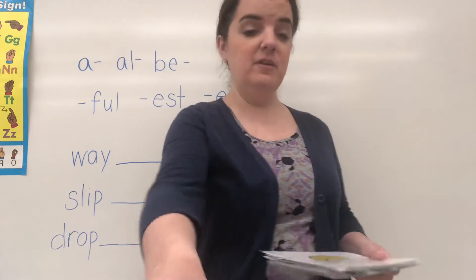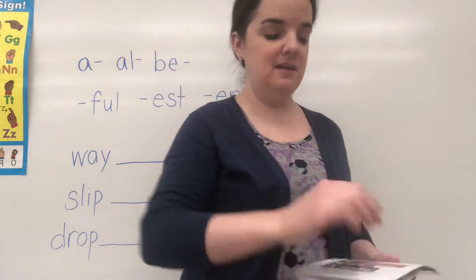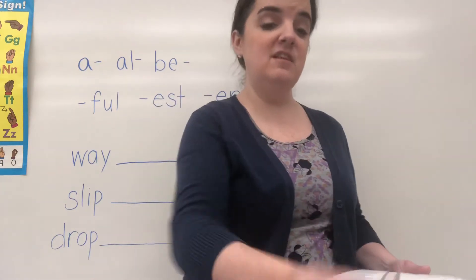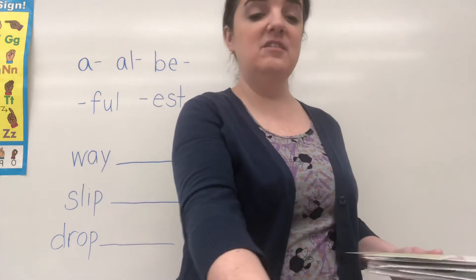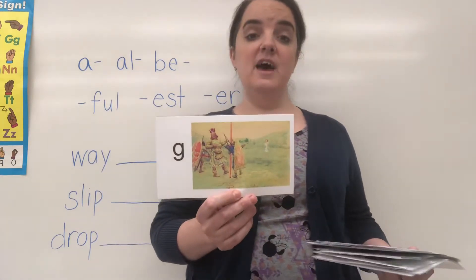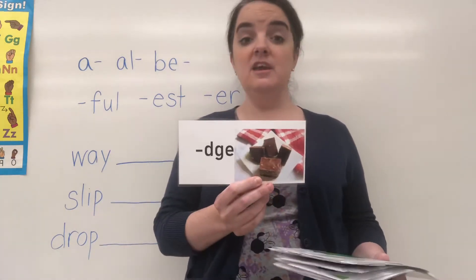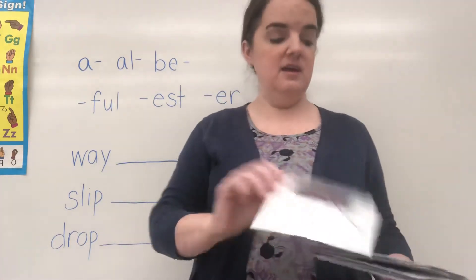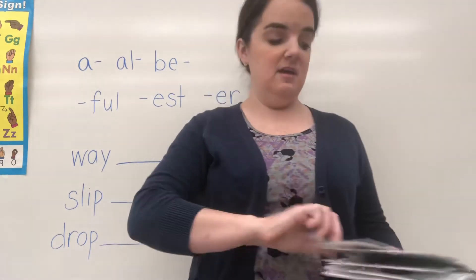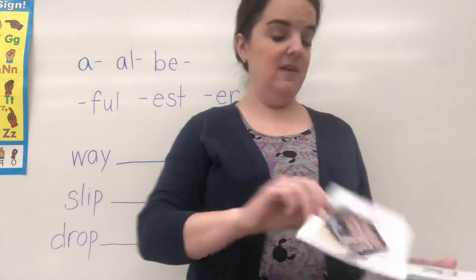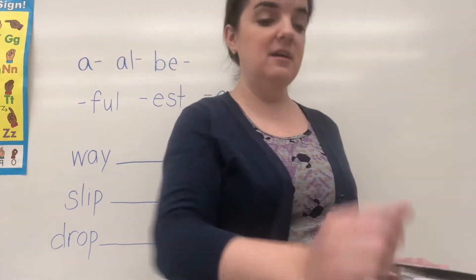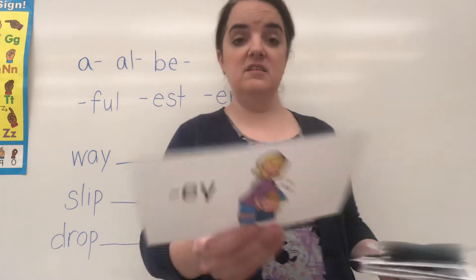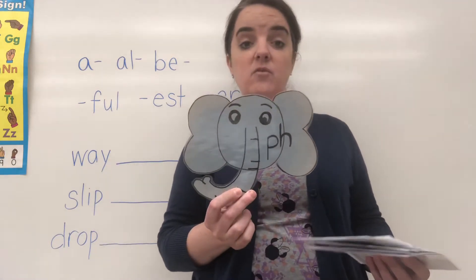The teacher reviews special sounds: O says uh as in shovel. A says uh as in banana. C says s as in city. AU says ah as in faucet. AW says ah as in saw. G says j as in giant. DGE says j as in fudge. EA says e as in leaf, eh as in thread, or a as in break. IE says e as in brownie. EY says e as in key or a as in obey. PH says f as in elephant.